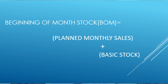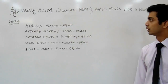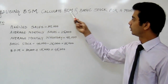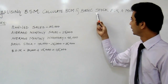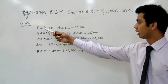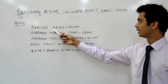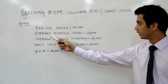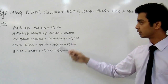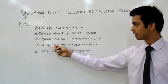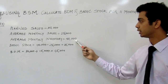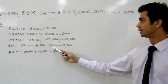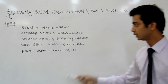Now I am going to explain an example using the basic stock method. Calculate beginning of month stock and basic stock for a month. You are given planned sales of a month equal to 30,000, average monthly sales equal to 25,000, and average monthly inventory equal to 40,000. So basic stock is equal to 40,000 minus 25,000, that is equal to 15,000.